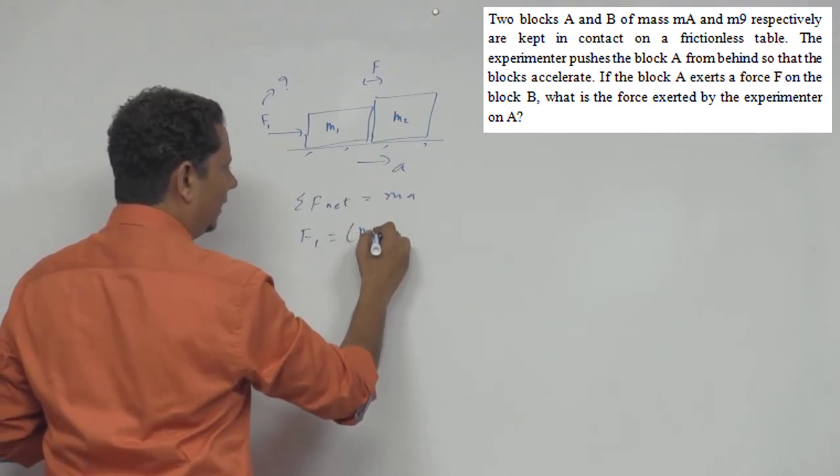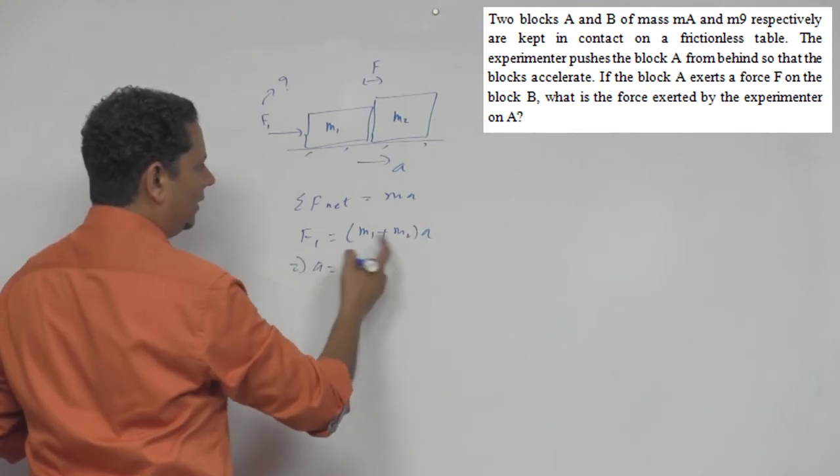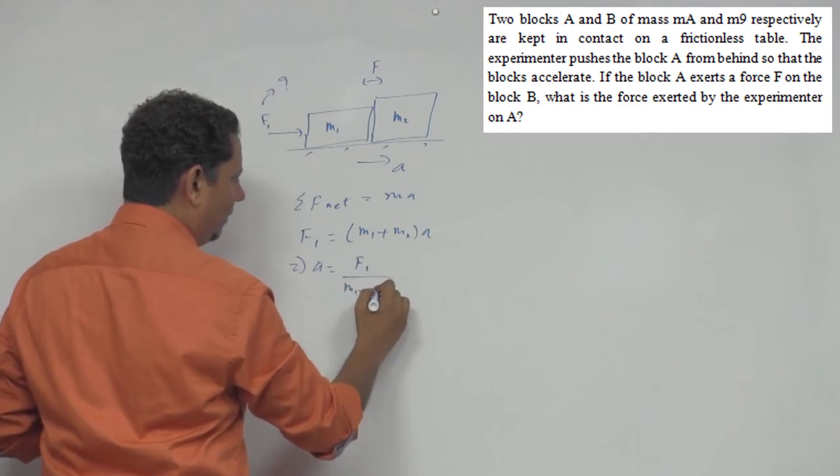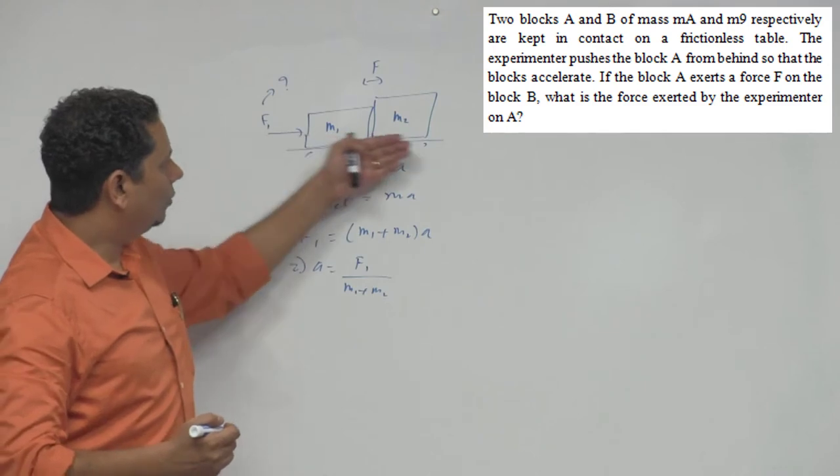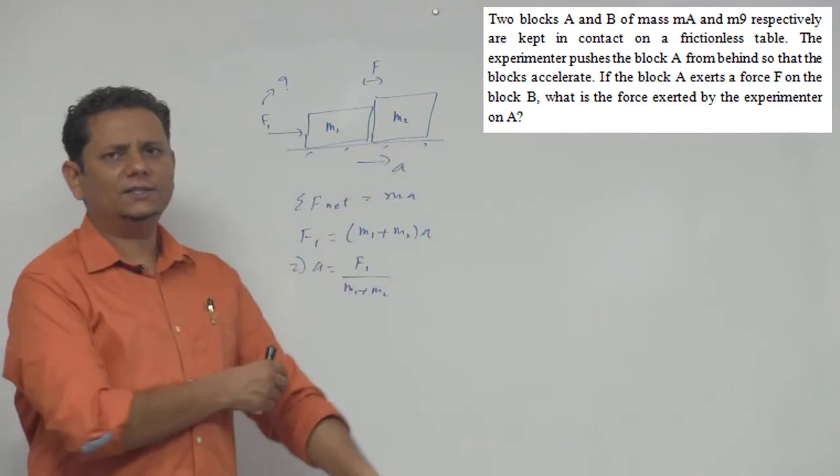That will be equal to M, yarni ki (M1 + M2)a, which implies aapka acceleration a jo hai, that will be equal to F1/(M1 + M2). Humne acceleration ko aise likh sakta hai. Is case me kyunki dono ka acceleration same hai, dono ka ek system maanke, aapki acceleration ki value nikal liye.